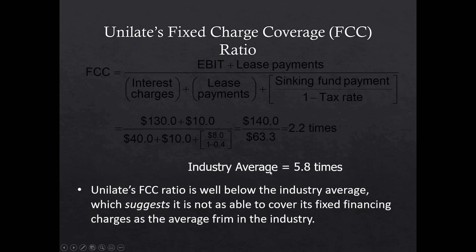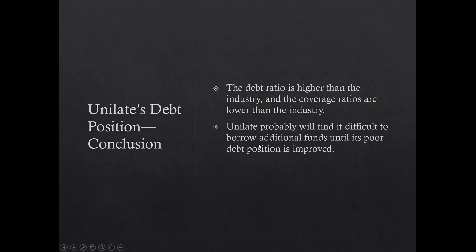The fixed charge coverage of 2.2 times versus an industry average of 5.8 times confirms Unilate is not able to cover its financing charges as well as the average firm. The debt conclusion: debt ratios are higher than industry average, coverage ratios are lower, so Unilate will find it difficult to borrow more funds and needs to look at ways to improve its debt position.